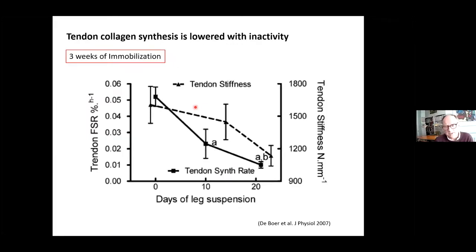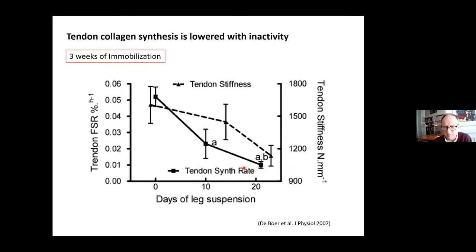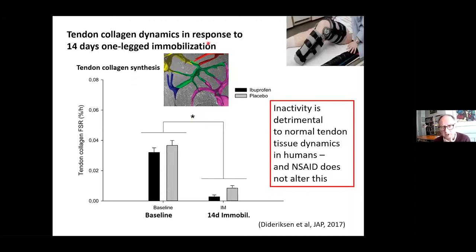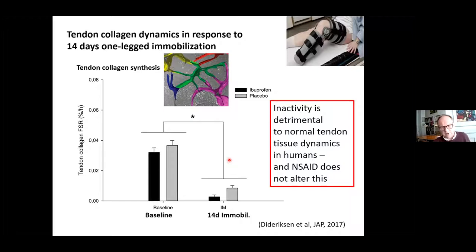What happens if we lack mechanical loading? A study by Marco Norici with Michael Rennie's group showed that three weeks of immobilization actually decreases the tendon collagen synthesis rate — basically shutting down completely the new formation of collagen in the small pool of tendon. We replicated this with two weeks of immobilization. We also treated people with anti-inflammatory drugs for two weeks and saw absolutely no difference in the reduction, so blocking the inflammatory pathway does not inhibit this decrease in collagen formation.